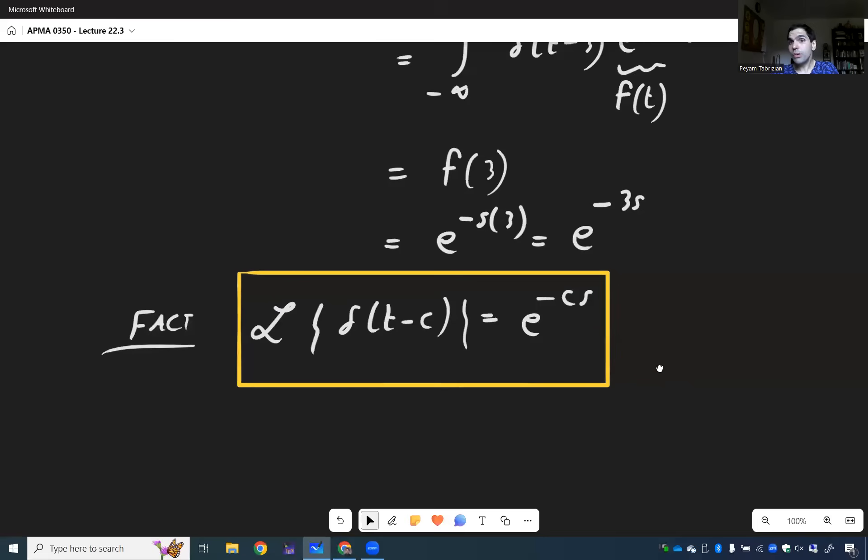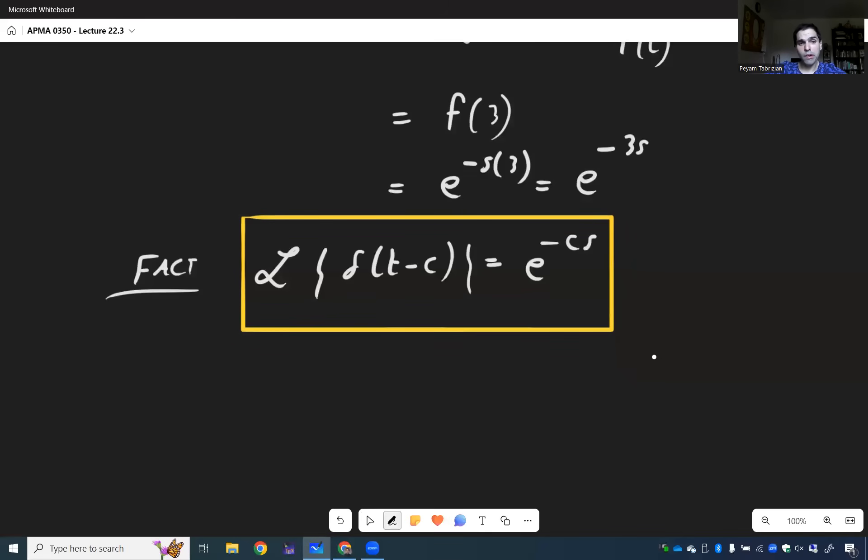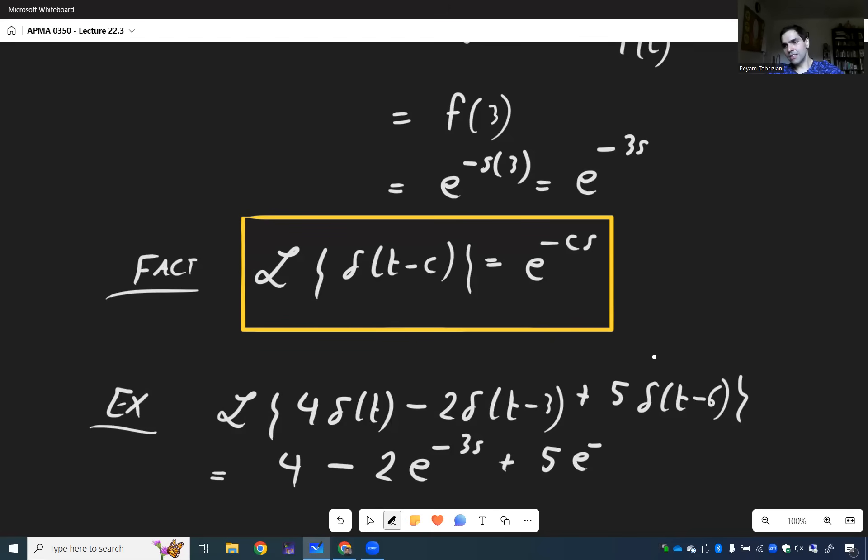And lastly, let's just do a quick wrap-up example. So what if you had to do Laplace transform of 4δ(t) - 2δ(t-3) + 5δ(t-6)? You don't need to reinvent the wheel. You're allowed to use the formulas directly. So I think it becomes 4 - 2e^(-3s) + 5e^(-6s).